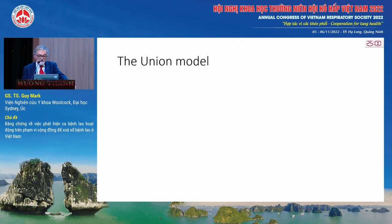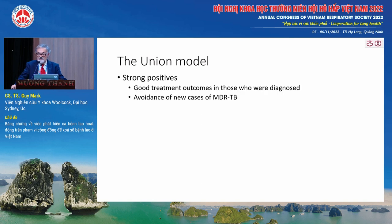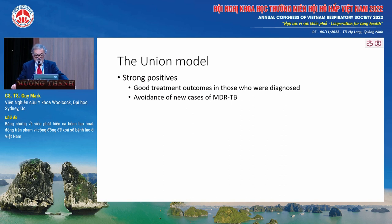There were many strong benefits of implementing the DOTS model for TB control over the last 30 years. In particular, directly observed short-course chemotherapy did guarantee good treatment outcomes in patients that were diagnosed. And it also guaranteed, if properly adhered to, that there would not be the development of drug resistance. If patients were observed taking their treatment and had a good continuous supply of medication, they would not develop multi-drug resistant tuberculosis. These were the two big advantages and strengths of the DOTS model.